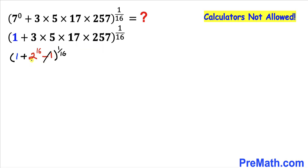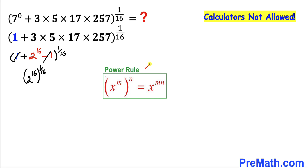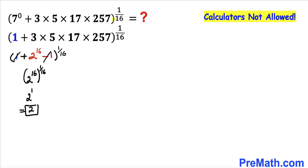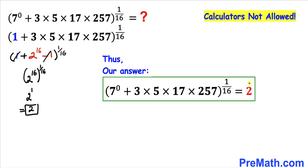Now we can see that the negative 1 and positive 1 cancel out, leaving us with only 2 to the power 16, raised to the power 1 over 16. Applying the power rule, 16 times 1/16 equals 1, so we get 2 to the power 1, which is simply 2. Thus our entire problem has been simplified to 2.